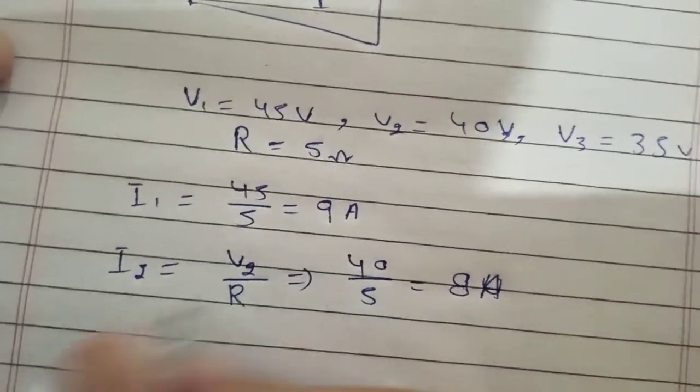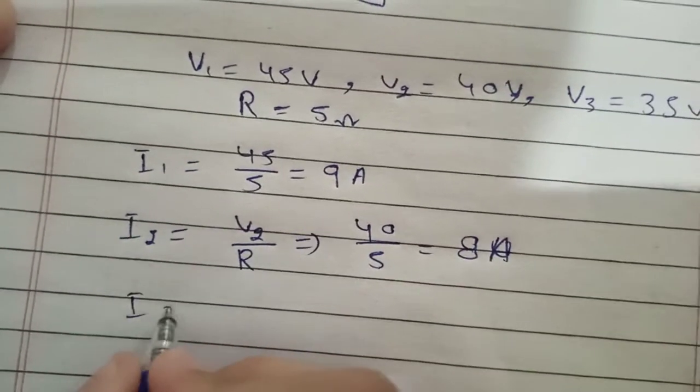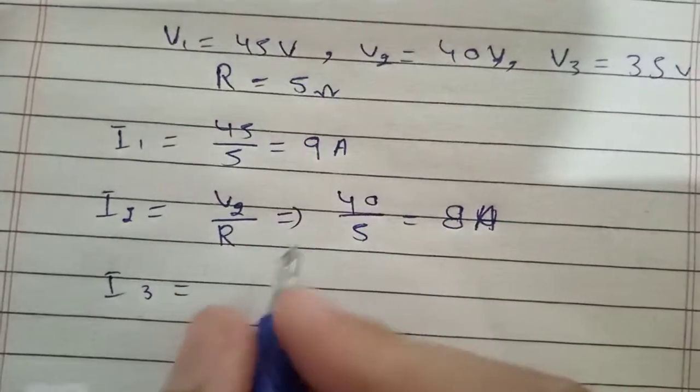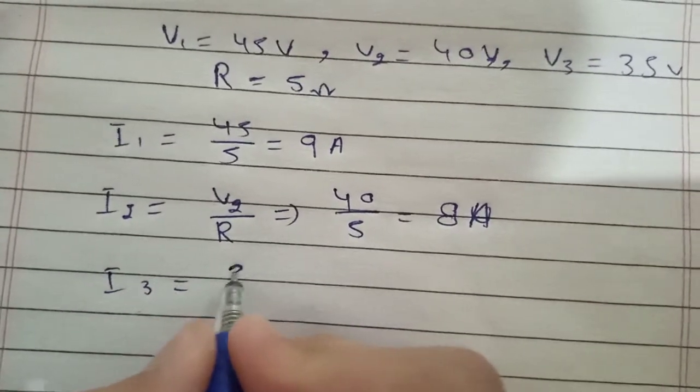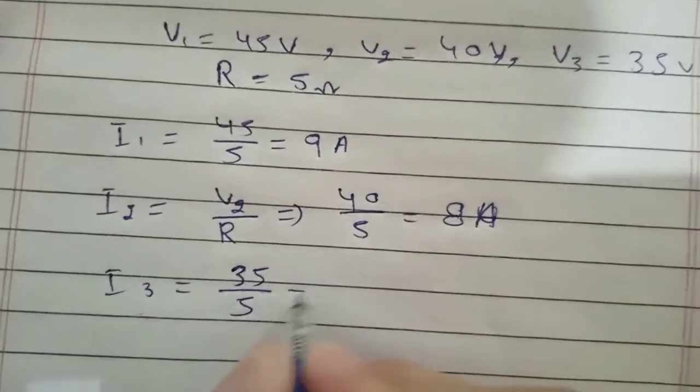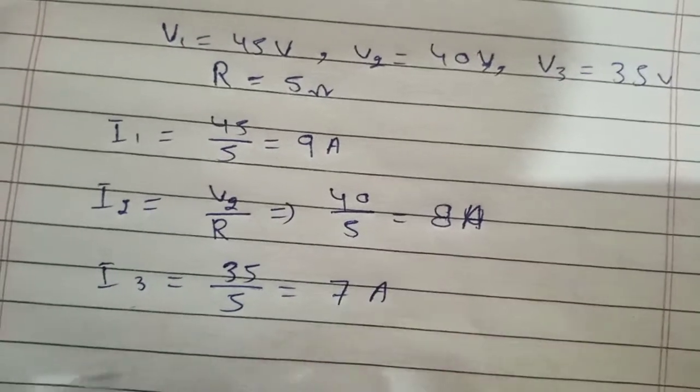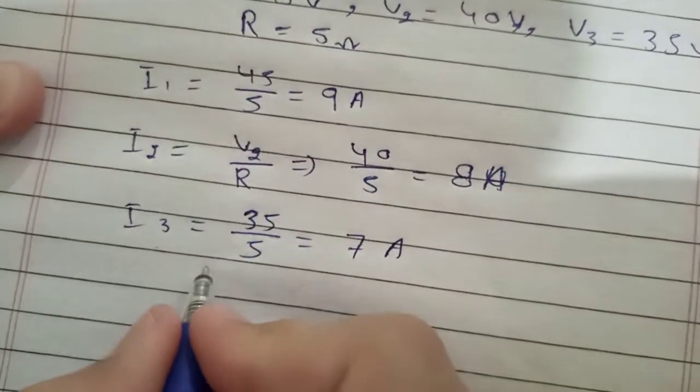I3 will result in 35 by 5, which is 7 amps. So here we will draw the corresponding graph for both of these.